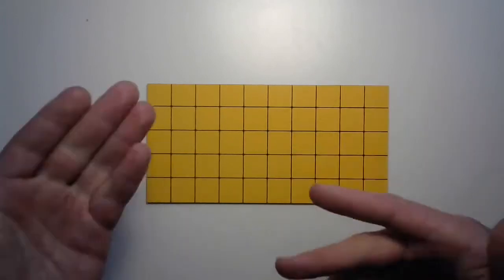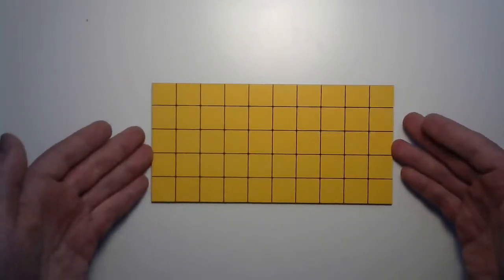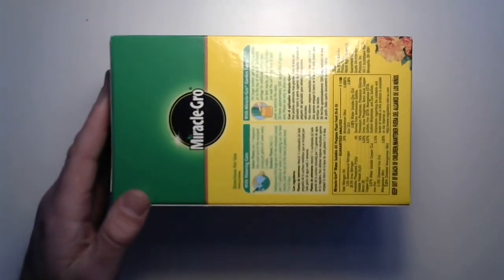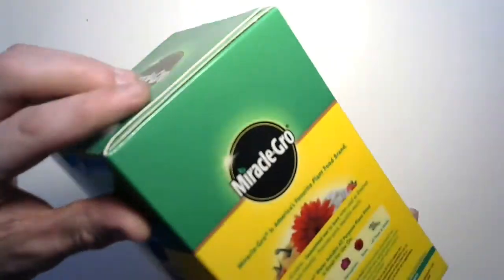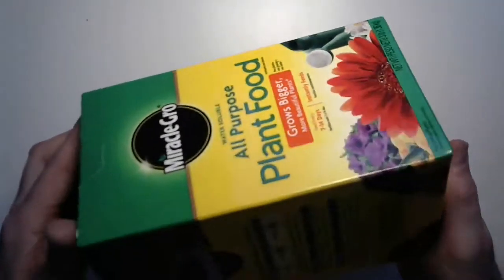We took care of parallelograms and triangles too—we transformed them into rectangles and then it was easy. But what if I wanted to measure inside of something like this box of plant food?